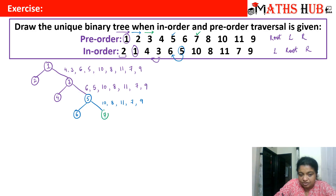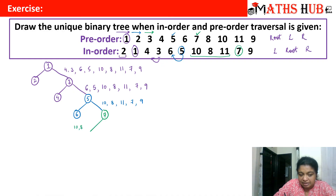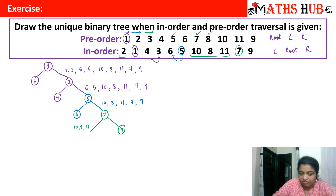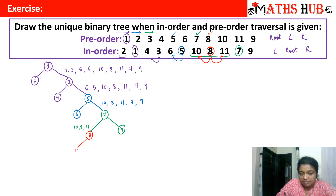We check pre-order again: out of 10, 8, 11, 7, and 9, which appears first? 7 appears first, so 7 is the next root. In in-order, 10, 8, and 11 all lie towards the left of 7, and 9 is on the right. Out of 10, 8, and 11, which appears first in pre-order? 8 appears first, so 8 is the next root. Back in in-order: 10 lies to the left of 8 and 11 lies to the right. So 10 comes on the left and 11 on the right — this completes the binary tree.